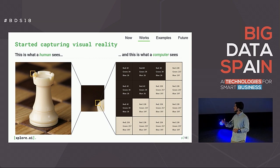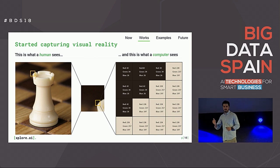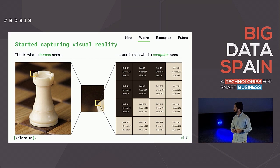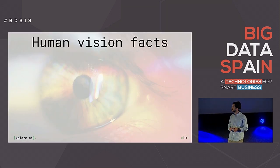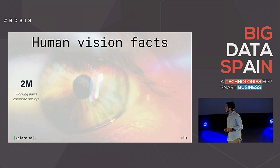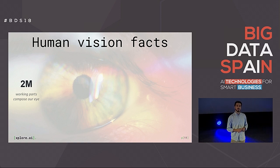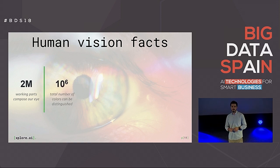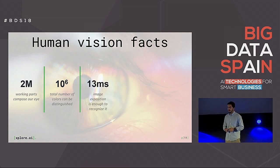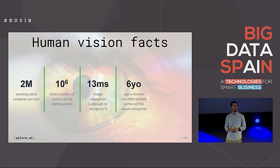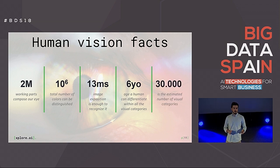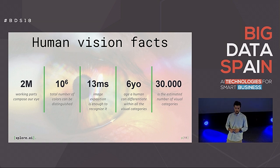In the case of the human eye, perception is quite easy — you can recognize a rook, a chess piece, really quickly. But from the computer's perspective, this takes a lot of work. The brain does this in a few milliseconds; the eye works with two million parts and is the second most complex organ in the body after the brain. It can differentiate between approximately one million colors, and it takes just 13 milliseconds to recognize something you're exposed to. It takes six years of your life to be able to recognize things, because by that age we can recognize 30,000 visual categories.